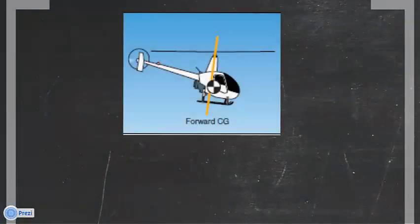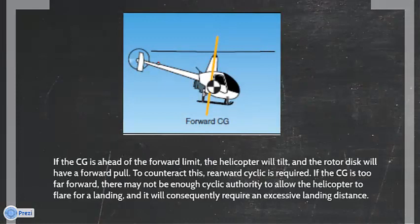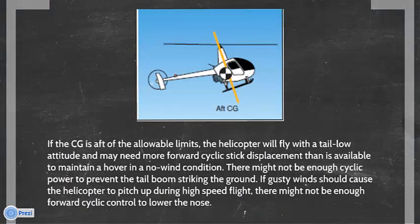If the CG is ahead of the forward limit, the helicopter will tilt and the rotor disc will have a forward pull. To counteract this, rearward cyclic is required. If the CG is too far forward, there may not be enough cyclic authority to allow the helicopter to flare for a landing, and it will consequently require an excessive landing distance.